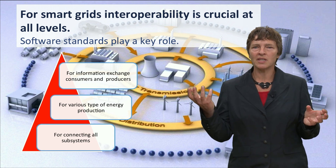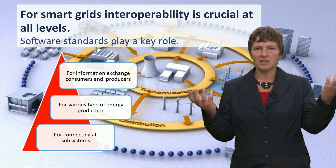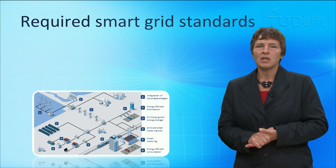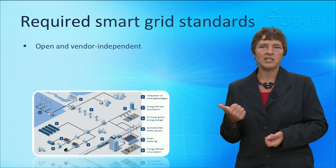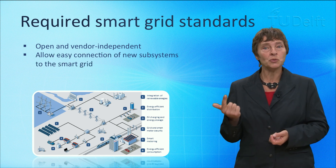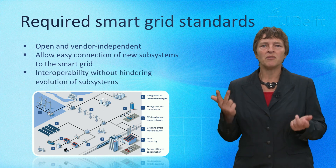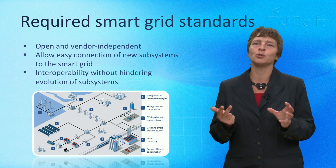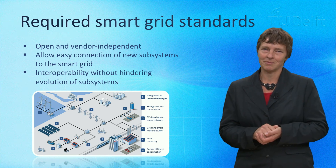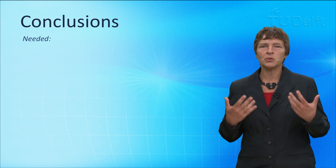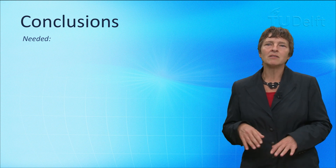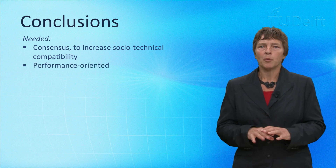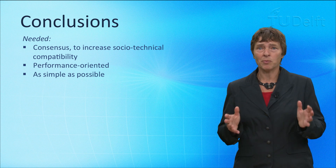The more different kinds of producers connect, the more consumers benefit and vice versa. These standards need to be open and vendor independent, make it easy to connect new subsystems to the smart grid, and define how to interoperate without hindering the simultaneous evolution of different subsystems. In other words, standards are needed that well bridge socio-technical differences, are performance-oriented and as simple as possible.